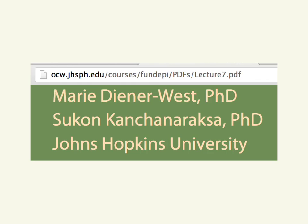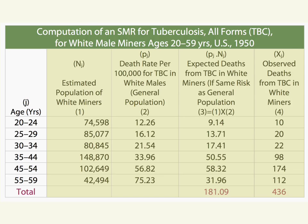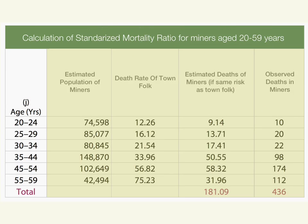This example comes from the same presentation I used in the previous example — the website is credited here, it's under a Creative Commons license. The actual dataset looks at tuberculosis in white miners in this town, but I simplified it a bit. We're just going to look at the overall death rate — not necessarily death rate from tuberculosis — and I changed it to town folk and miners so we can see.